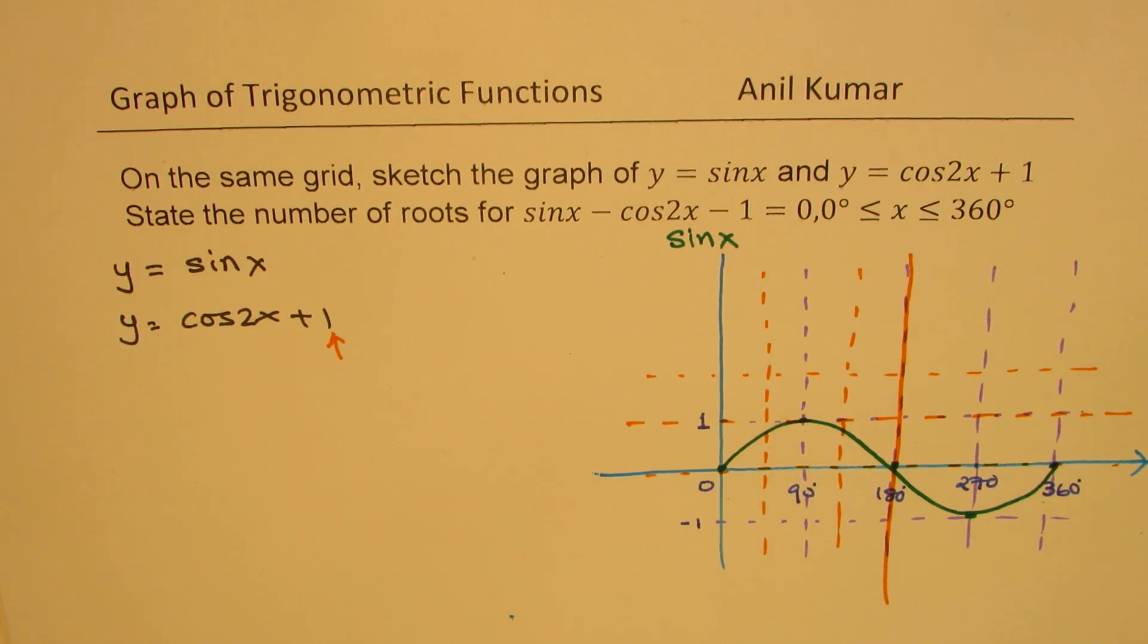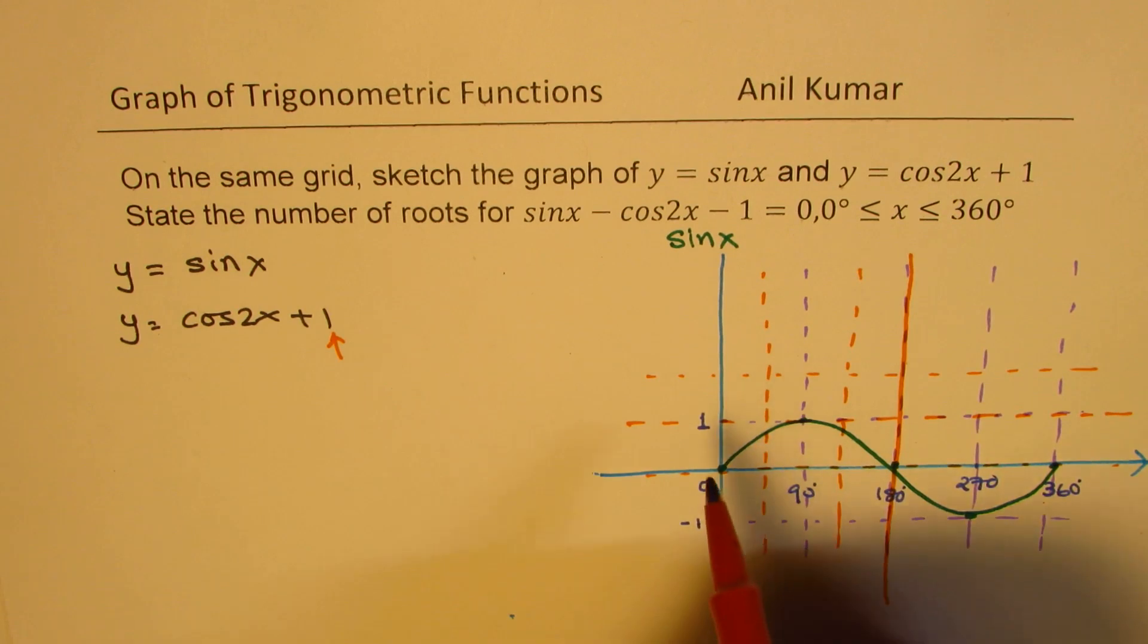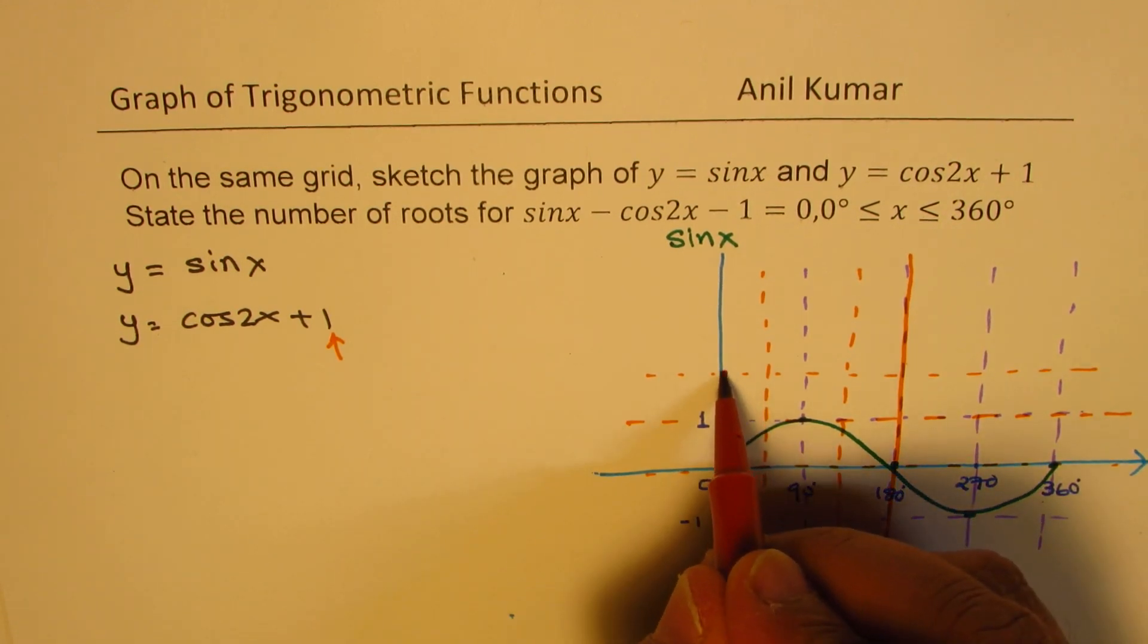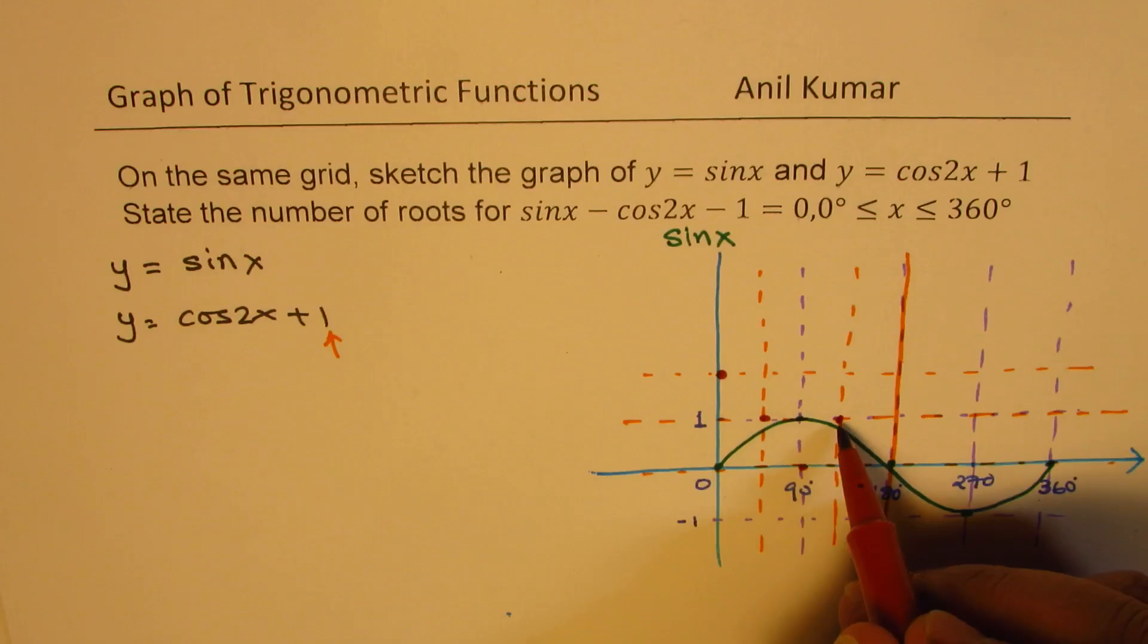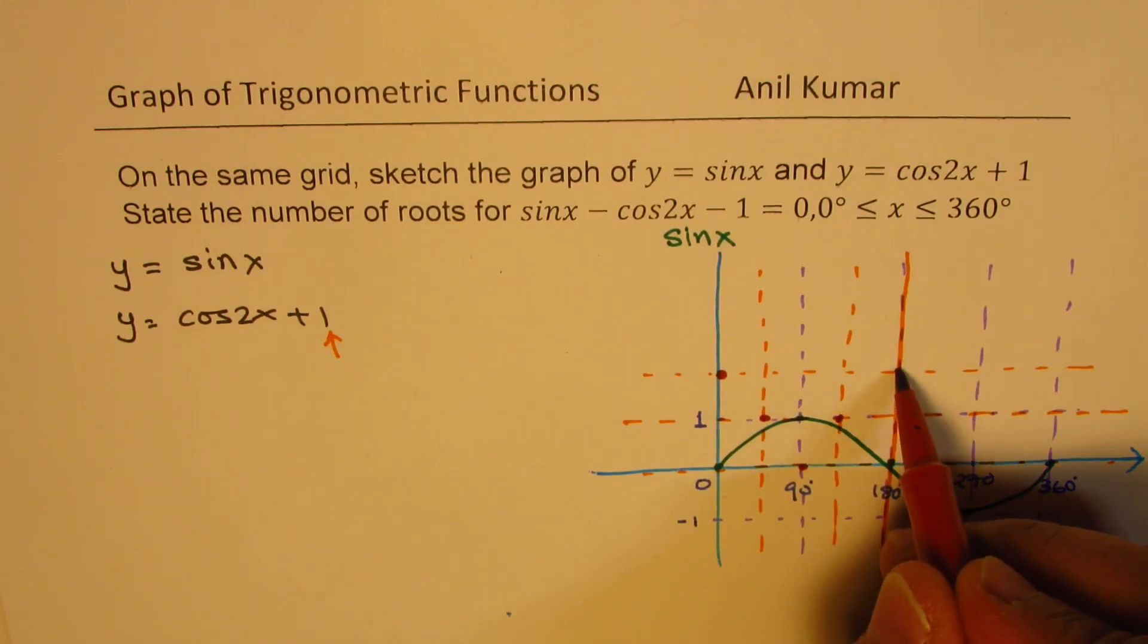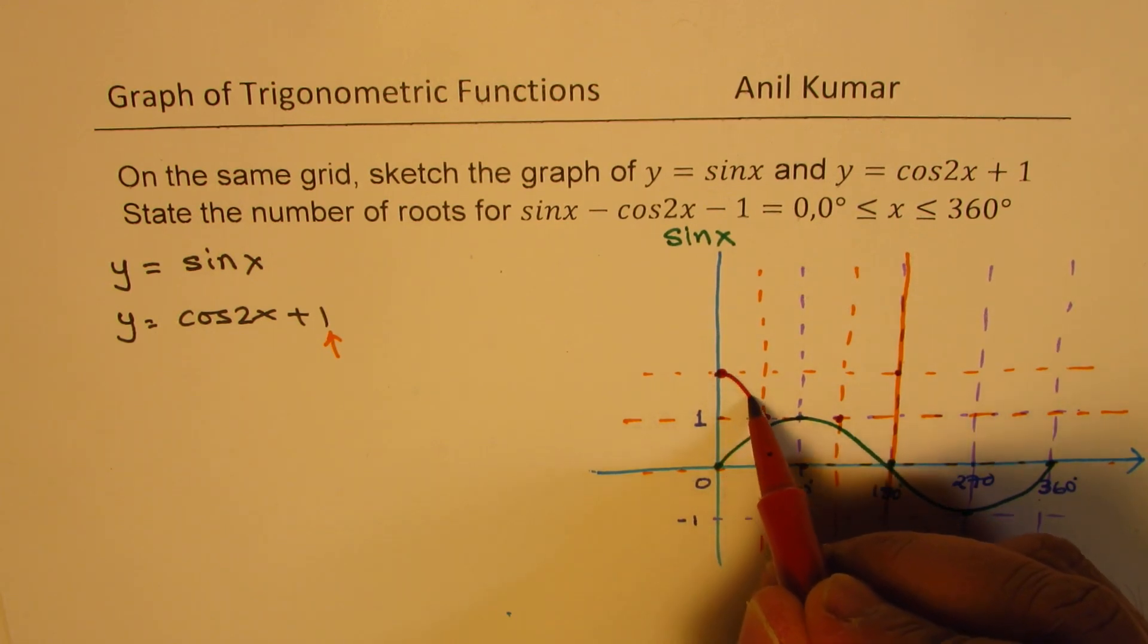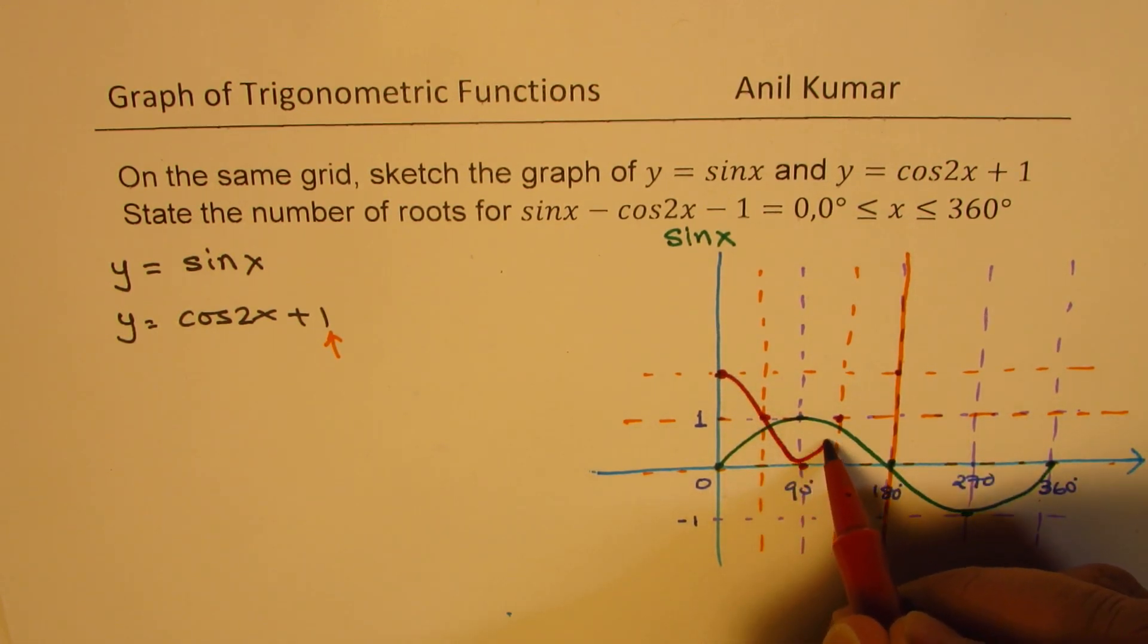Now, the cosine function basically starts with positive 1. Moving from here one step up, and then it comes down to 1, goes below to the axis, and then goes back to the maximum. So one wave will be kind of like this.